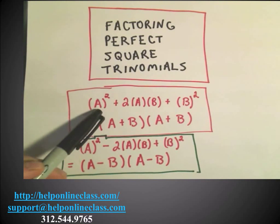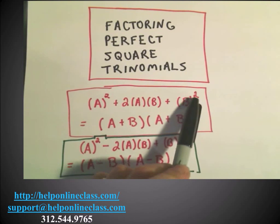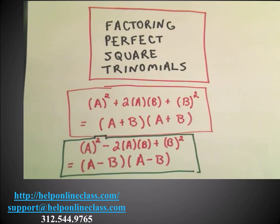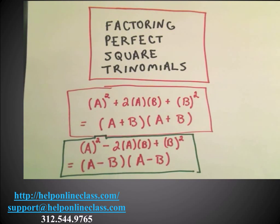It says if you have something squared, so a squared plus 2 times a times b plus b squared, if you can recognize that that's what's happening, you can actually factor that as a plus b times a plus b. If the coefficient on the ab term, instead of being positive 2, if it's a negative 2, the only thing that's going to change is inside the parentheses, you'll get a couple negatives.